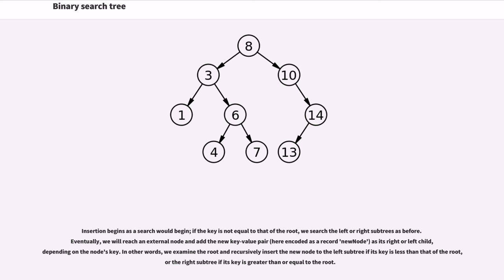Insertion begins as a search would begin. If the key is not equal to that of the root, we search the left or right subtrees as before. Eventually we will reach an external node and add the new key-value pair here, encoded as a record new node, as its right or left child depending on the node's key. In other words, we examine the root and recursively insert the new node to the left subtree if its key is less than that of the root, or the right subtree if its key is greater than or equal to the root.